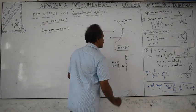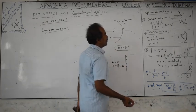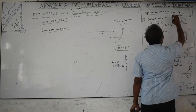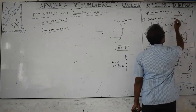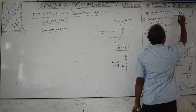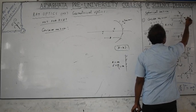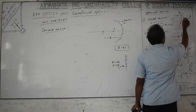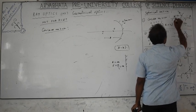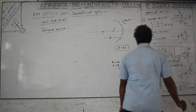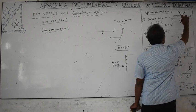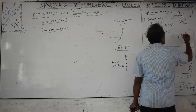Focal length is understood using paraxial rays — light rays parallel to and close to the principal axis. After reflection, they may meet or appear to meet; that point is called the principal focus. For a plane mirror, parallel rays reflect as parallel rays and don't meet at all. They appear to meet at infinity, so the focal length is taken as infinity.